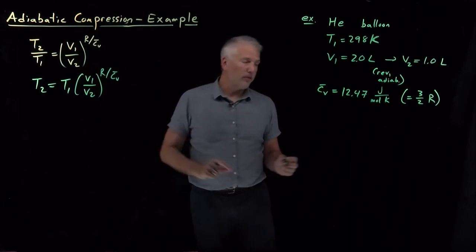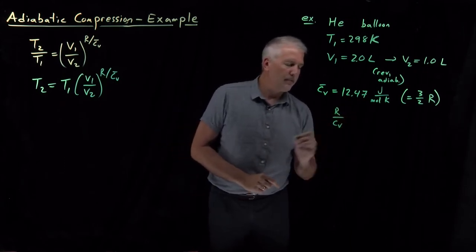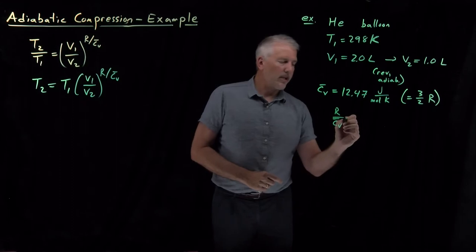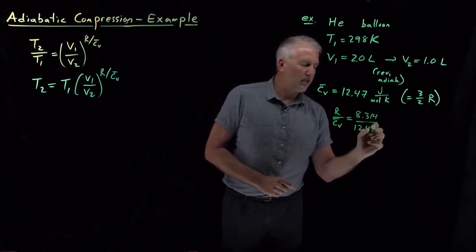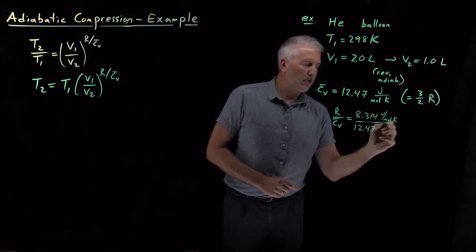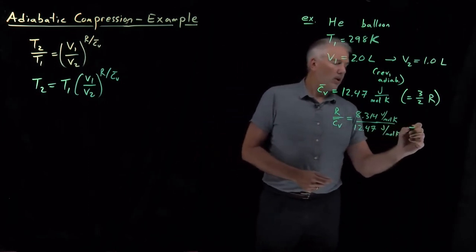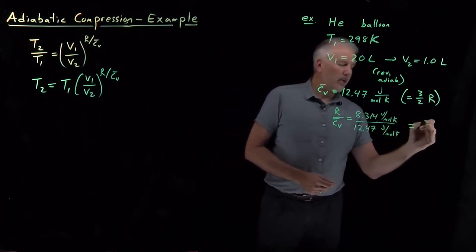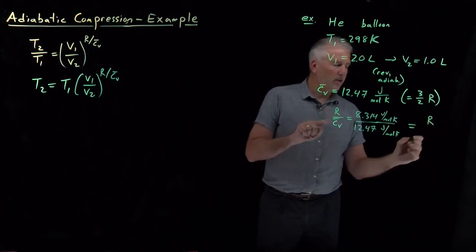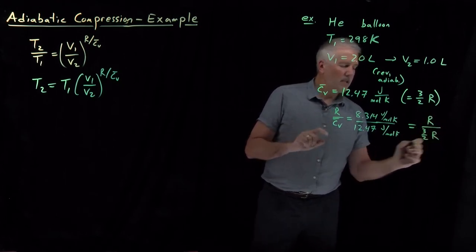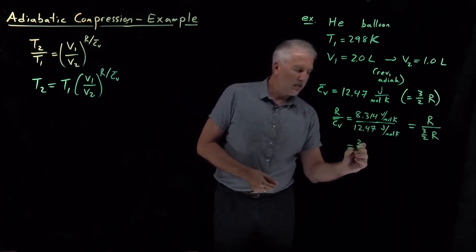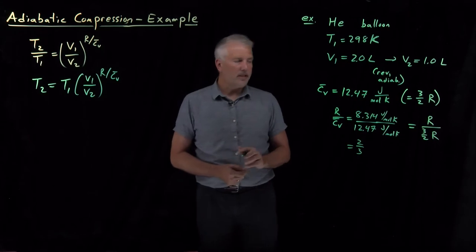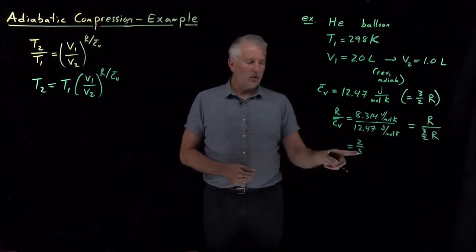Let's go ahead and do that. If I calculate R over CV, whether I calculate that numerically as the gas constant over 12.47 joules per mole Kelvin, or whether I do it algebraically and I calculate R in the numerator divided by three-halves R in the denominator, either way I do that calculation, this works out to be two-thirds. R divided by CV is one over three-halves or two-thirds.